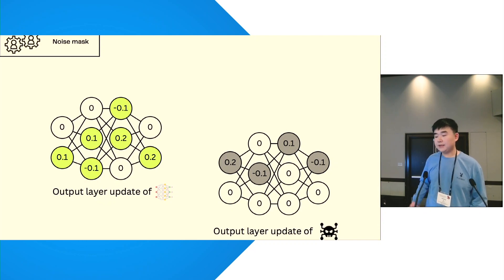The number of neurons being updated in the Backdoor Model is much less than that in a benign model. The reason behind this phenomenon is the bias of the attacker's training set.